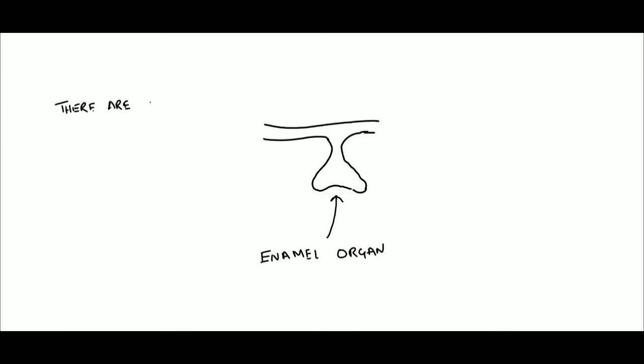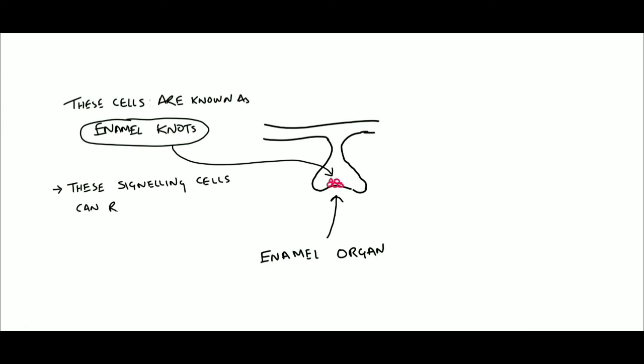There are some non-dividing cells in the enamel organ present near the inner enamel epithelium. These non-dividing cells are also called enamel knot, and these signaling cells can regulate the formation of the cusp in a tooth.